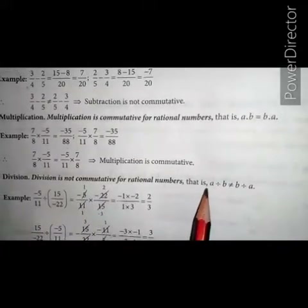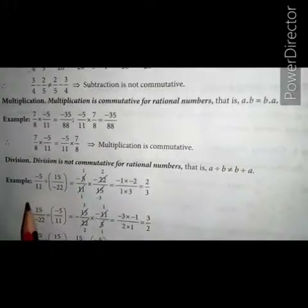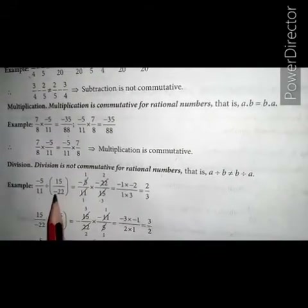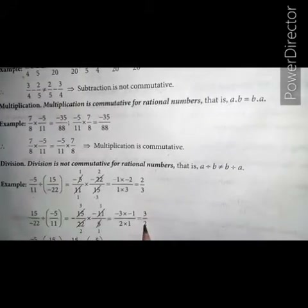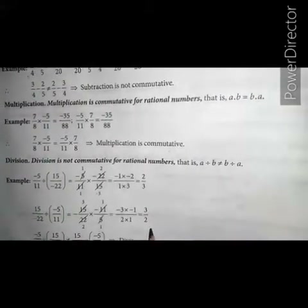Next, division: division is not commutative for rational numbers. That is, a divided by b is not equal to b divided by a. For example, let a equals to minus 5 upon 11 and b equals to 15 upon minus 22. On dividing a by b, we get 2 upon 3. On interchanging their places, b divided by a — that is 15 upon minus 22 divided by minus 5 upon 11 — we get 3 upon 2. They are not equal, so division is not commutative.